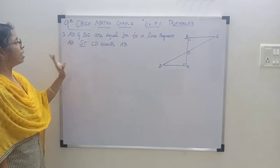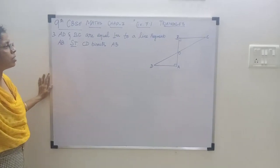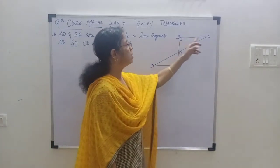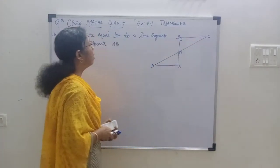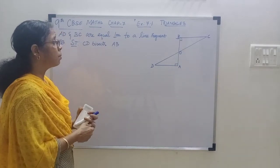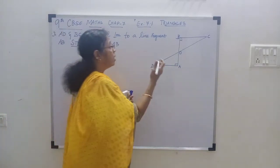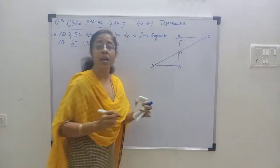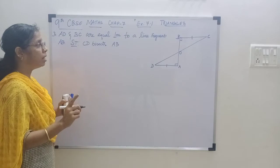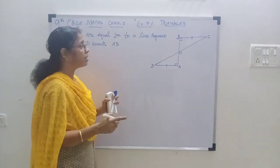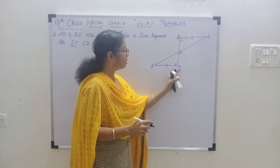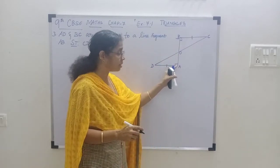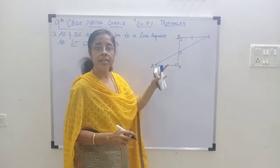See, what is the third sum? AD and BC are equal perpendiculars to the line segment AB. Equal perpendiculars in the sense AD and BC are equal, and because AB is the line segment, AD and BC are the perpendiculars making right angles at A as well as at B.